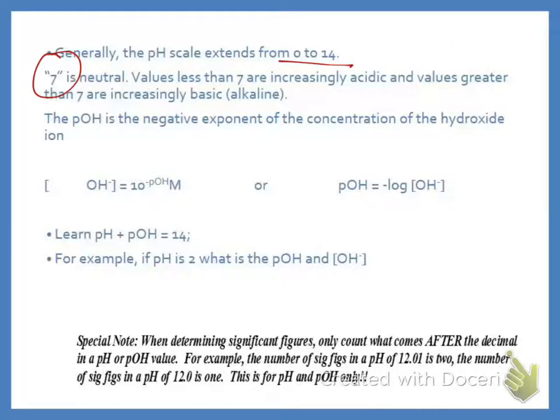We can also find hydroxide. The pOH is the negative exponent of the hydroxide concentration. We would get the negative log of the hydroxide would give us a pOH. If we're trying to find the hydroxide concentration and we had the pOH, we would take 10 raised to the negative pOH.